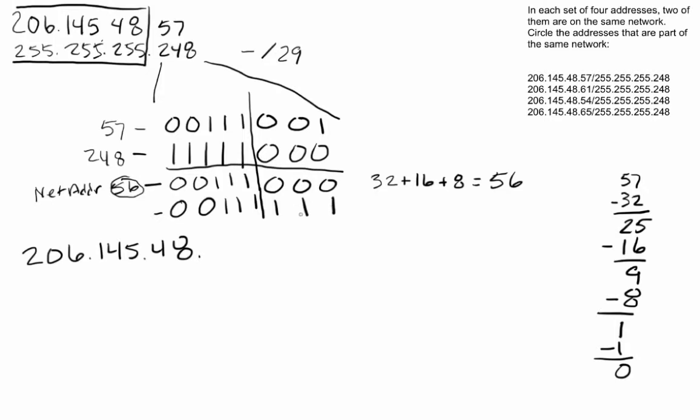And down here, we have our broadcast address. Now remember our shortcut. If we have contiguous 1s on the right-hand side, it's going to be 1 less than whatever position this is going to be. So that's 128, 64 if we have all 1s over there, it's going to be 1 less than that position, so that would be 63. We could also take 32 plus 16 plus 8 plus 4 plus 2 plus 1, and we could figure out that that is 56 as well. So our network address is 206.145.48.56. Our broadcast address is going to be 206.145.48.63.